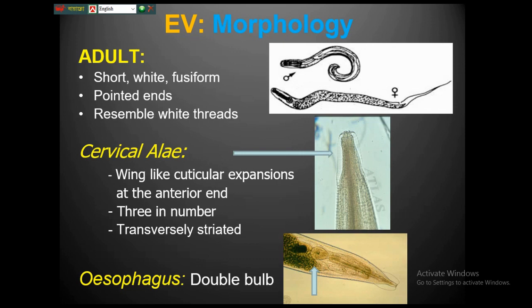In terms of morphology, this is a dioecious helminth — the nematode has both male and female varieties. It is a very tiny, white, fussy worm with pointed ends, resembling a thread — hence the name threadworm. The most prominent morphological feature is the presence of cervical alae, which are cuticular expansions at the anterior end. There are three cervical alae in total.